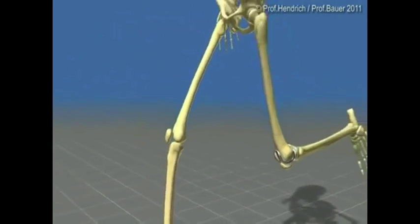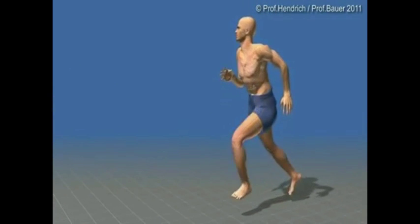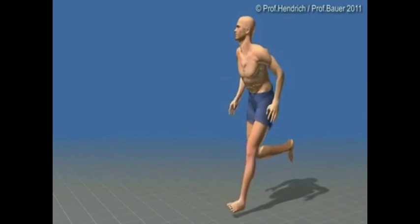Only the damaged cartilage surfaces are replaced by an implant. This is a reason why a patient can do his normal activities and also sports after a total joint replacement today.